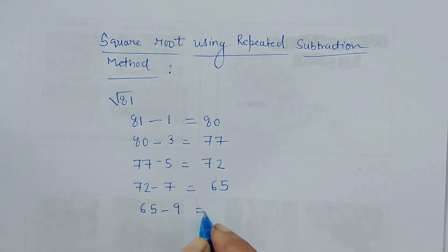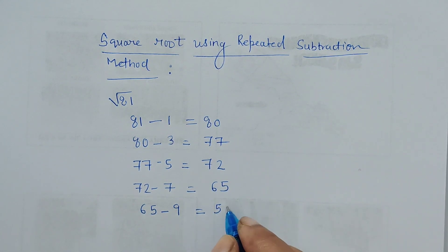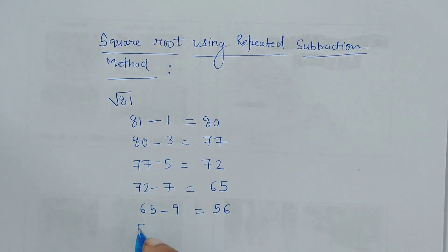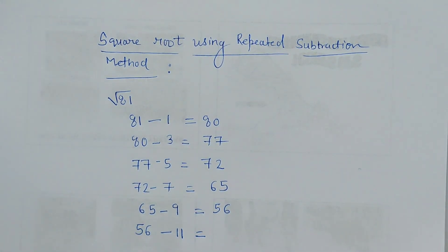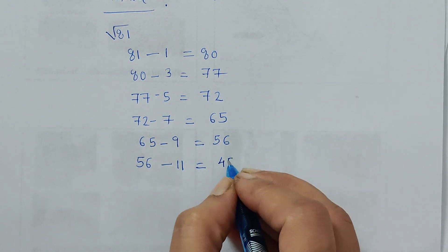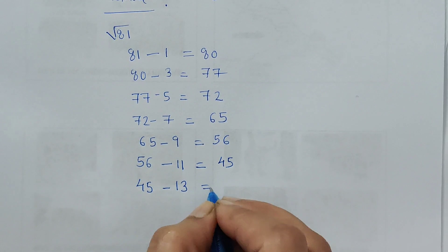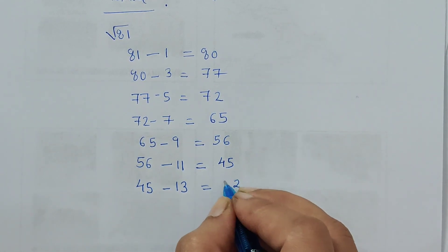Now write 56 here and subtract the next odd number, which is 11, so this gives us 45. Now write 45 here and the next odd number is 13, so this gives us 32.